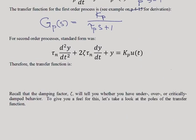Now, for second-order processes, you also have a standard form, and you've seen this a few days ago, where your standard form is you have your tau n, or your natural period, times your second derivative in time, plus 2 times zeta times tau n. Zeta is your damping factor, remember, times your first derivative, plus your function itself, y, equals to Kp times your input, U of T.